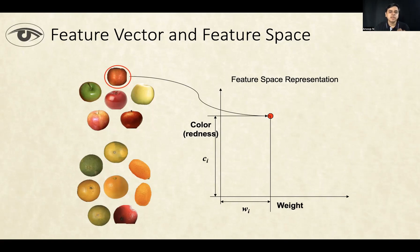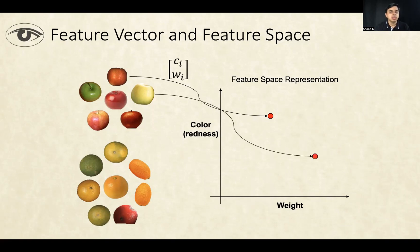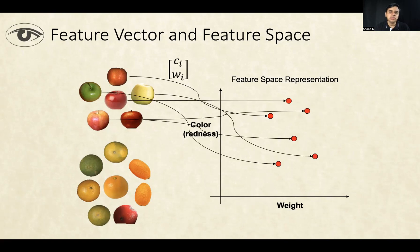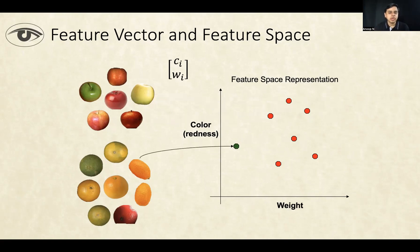Similarly, if I take other fruits, the first is the vector C1W1. If I take another fruit, it would become another point, and a third fruit becomes a third point in the space — depending on the size, weight, and color of the fruit, the location of this point would change. I can map all the points from the apples into this feature space, and for convenience I've colored all those points as red — not to do with the feature value, but just to indicate that all these dots correspond to apples.